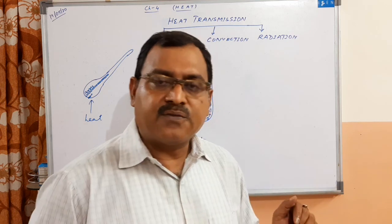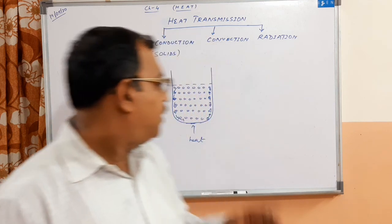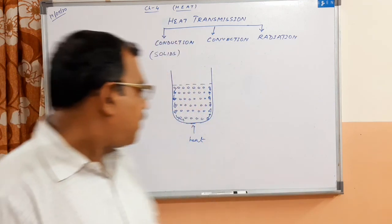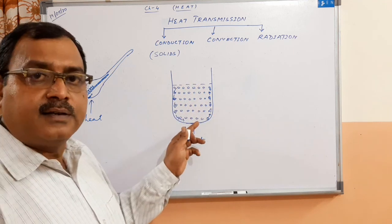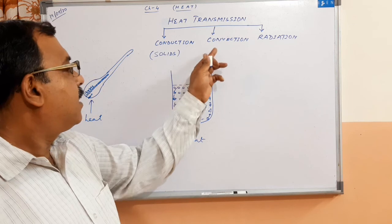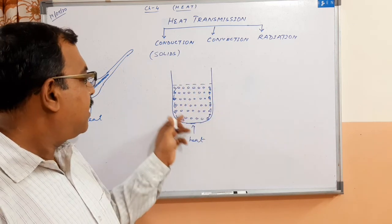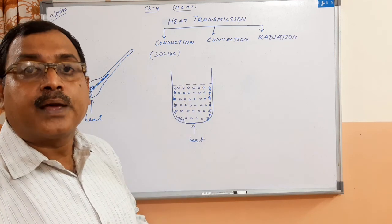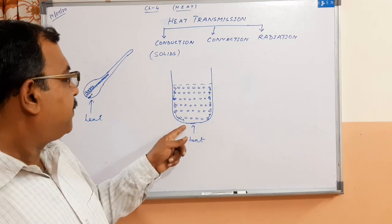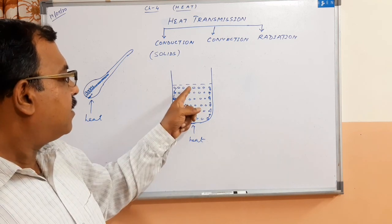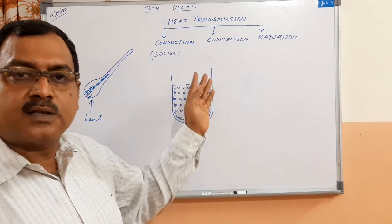The definitions I will give you when we do the question answers. So convection — this type of transmission of heat is because of convection current. You can see a current is set up, and such a current is called a convection current. Remember, here the molecules actually leave their place, come to the source of heat, and after absorbing heat, go back to their place.